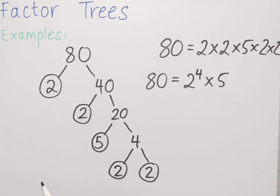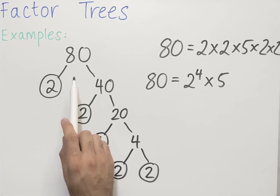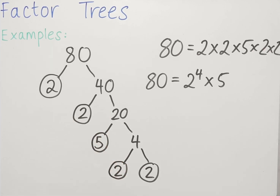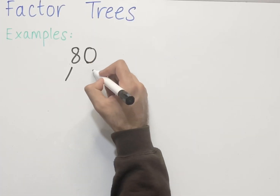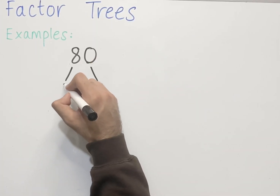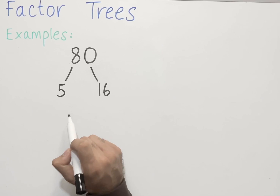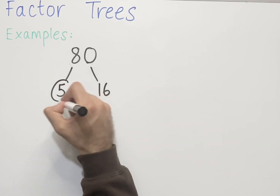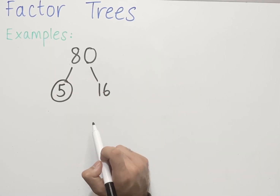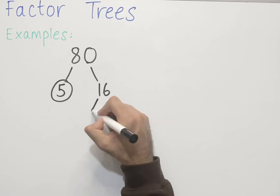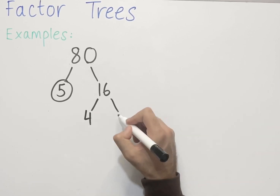Something to note is that we can draw factor trees in multiple ways. I'll show you another way of writing 80, where we don't start with 2 and 40 first — we start with a different set of numbers. Two numbers that multiply to make 80: we can start off with 5 and 16. 5 times 16 gives us 80. 5 is a prime number, so we can circle it. 16 is not a prime number, so we can factorise it further. Two numbers that multiply to make 16: we can have 4 and 4. 4 times 4 gives us 16.